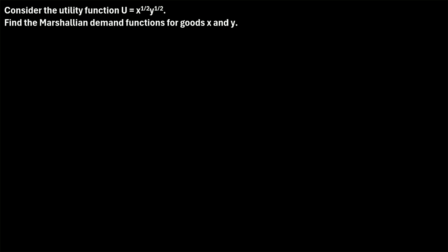In this video, I will explain how to derive Marshallian demand functions, sometimes also called uncompensated demand functions. So let's jump into an example. Consider the utility function u equals x to the one-half times y to the one-half. Find the Marshallian demand functions for goods x and y.